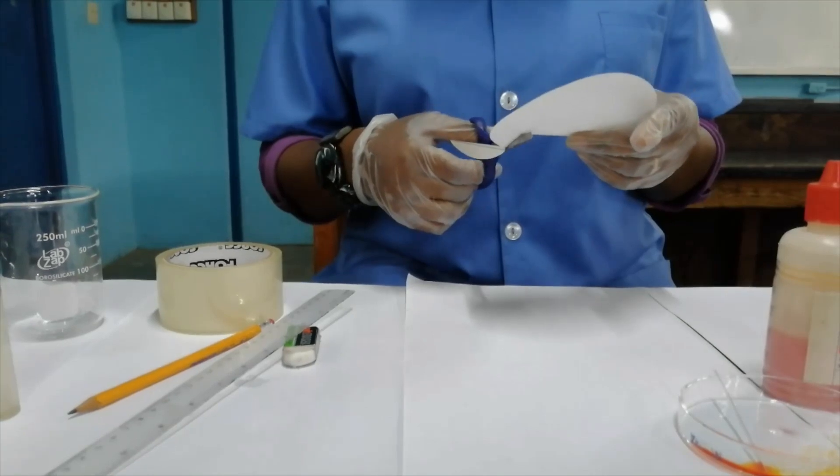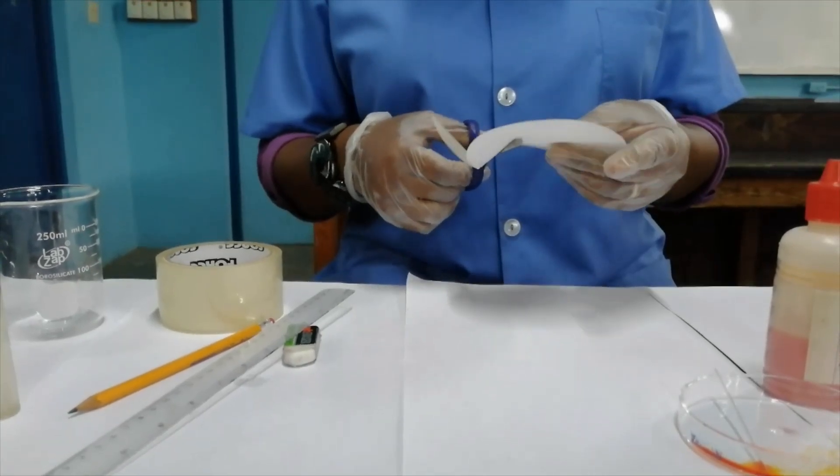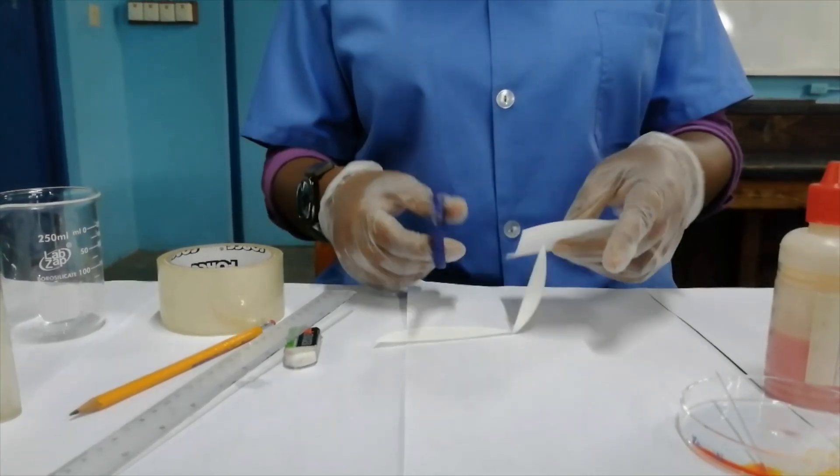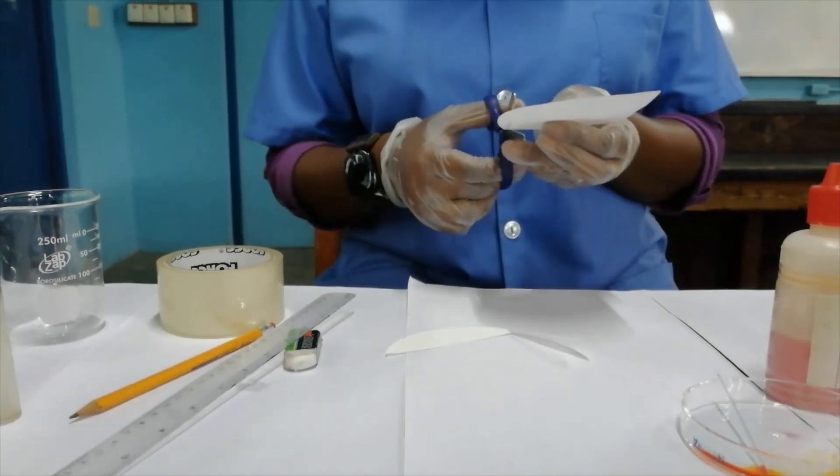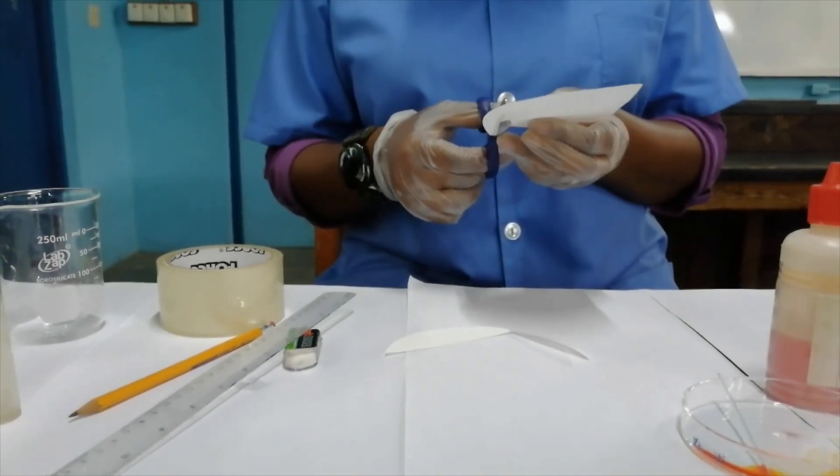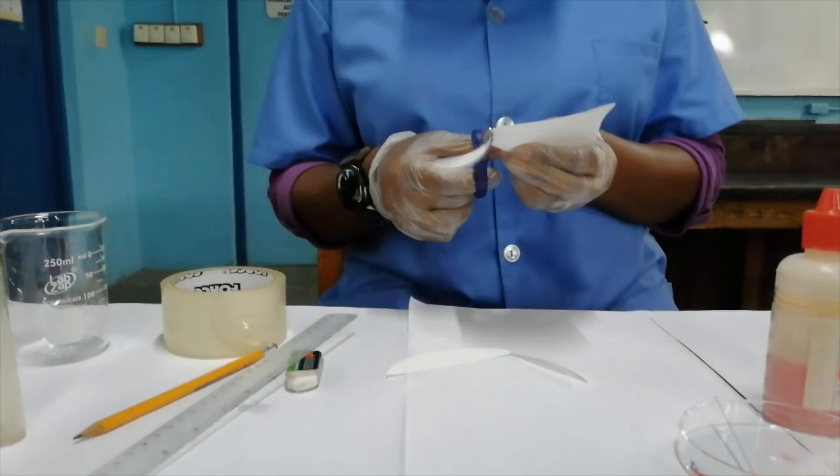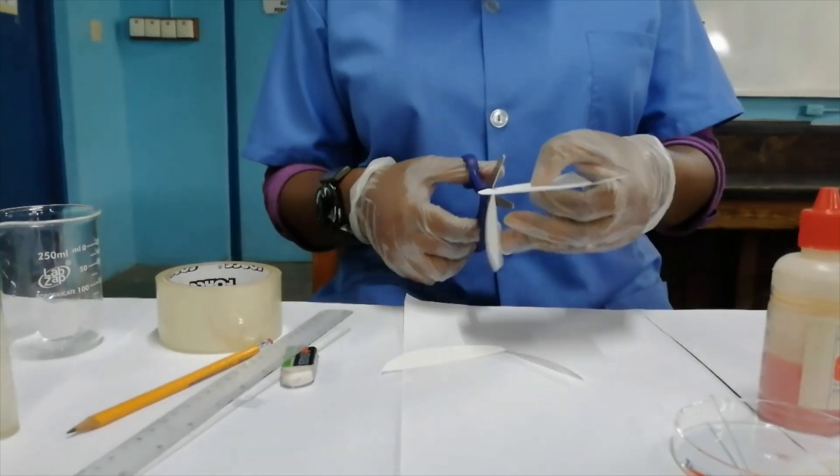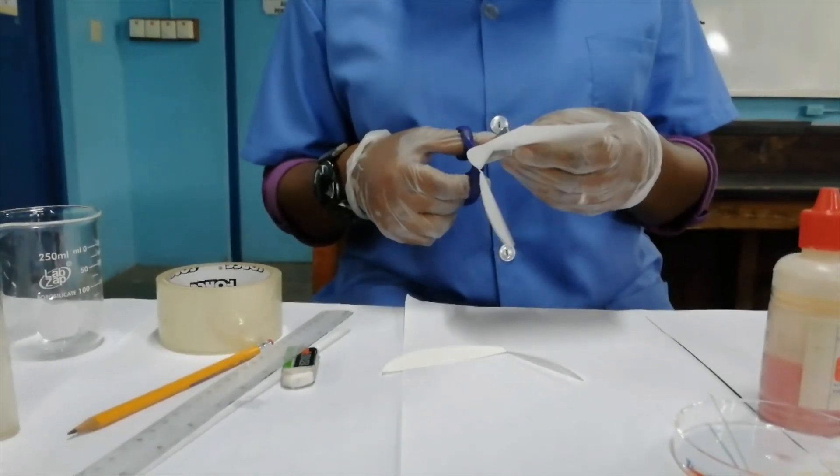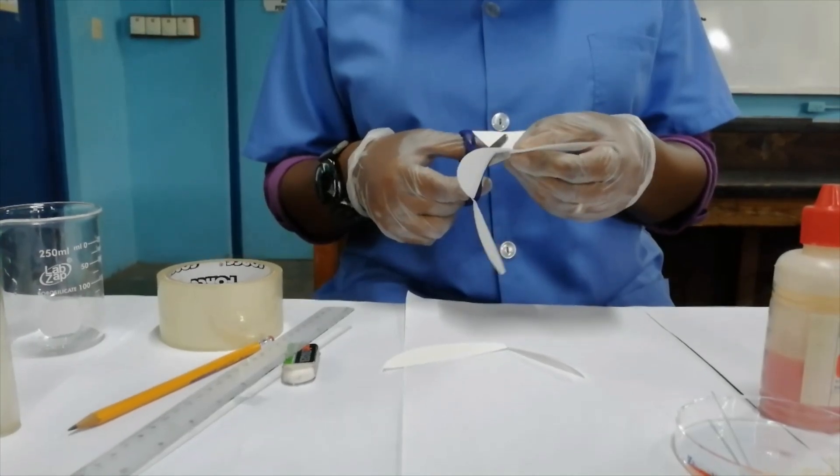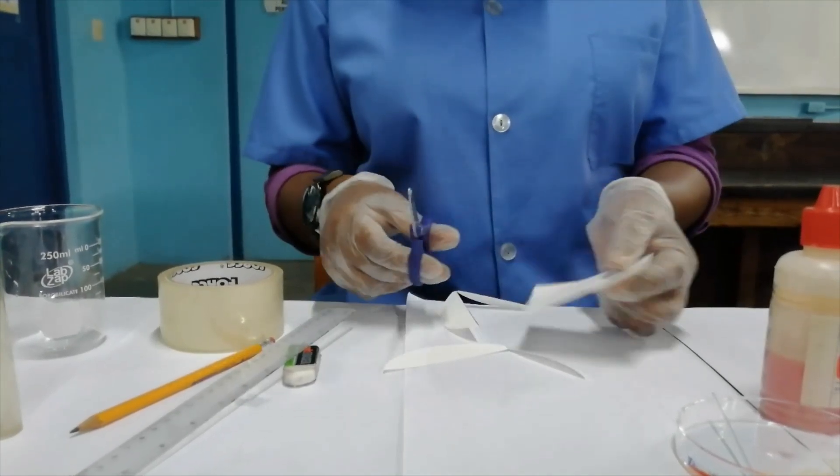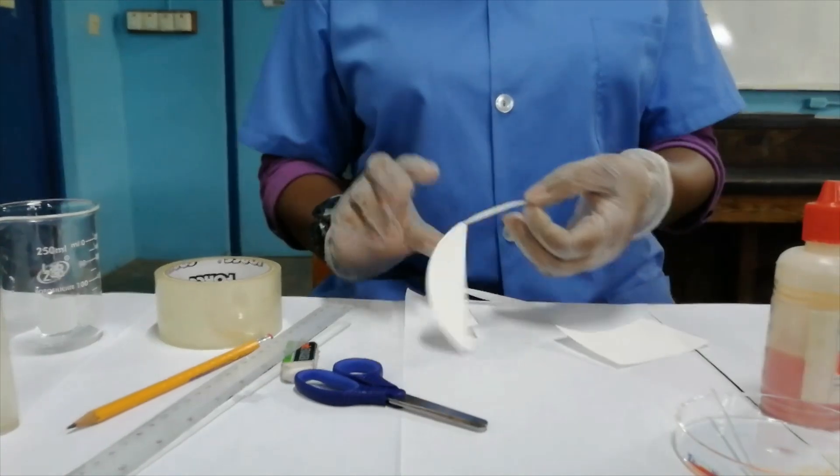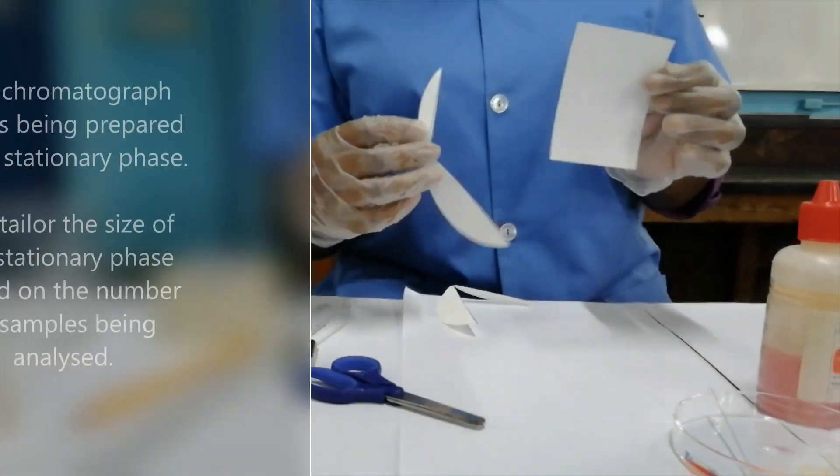The reason we use a pencil not a pen is because if the ink touches water or any solvent it's soluble in, it's going to run up the paper. We do not want that. The pencil has graphite in it and the graphite isn't soluble in water, so you will not have any streaking of the paper.